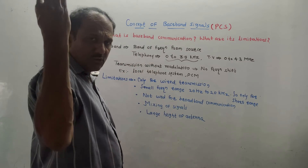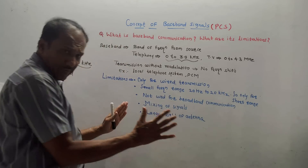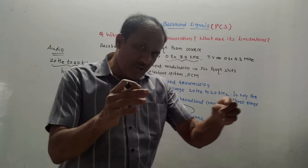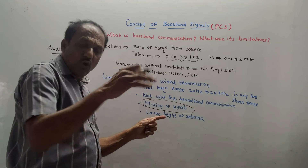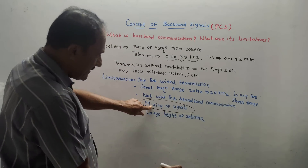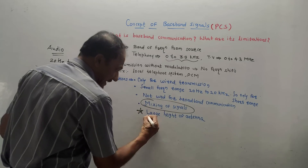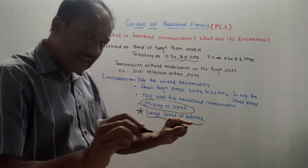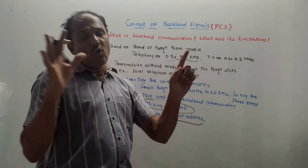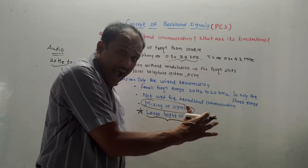Third, baseband is not used for broadband communication such as fiber optic or satellite systems. Fourth, since the band of frequency is limited, passing many signals simultaneously through the channel can cause mixing of signals, also called inter-symbol interference. Fifth, since modulation is not used — no carrier frequency is mixed — it requires a very large, high-height transmission antenna.